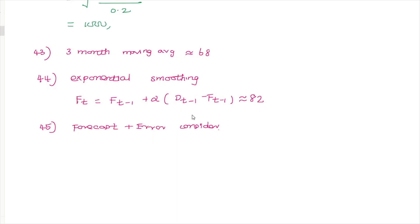The queuing model question involves traffic density (ρ = λ/μ), where λ is the arrival pattern and μ is the service rate. The listening subset is determined from these parameters.